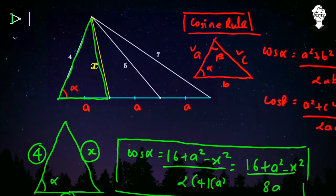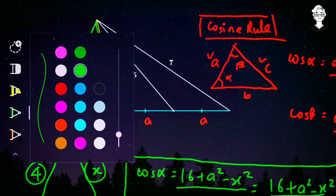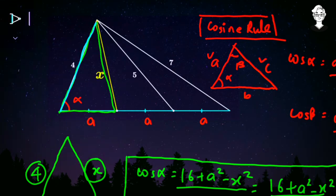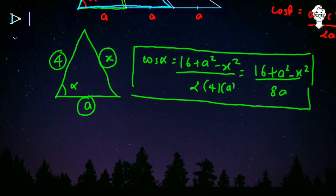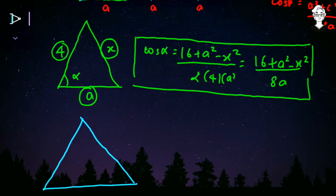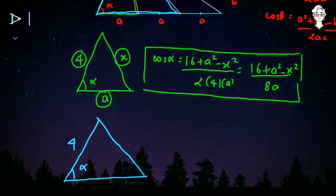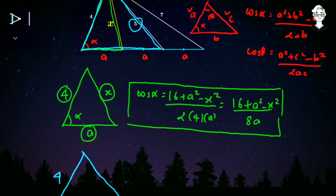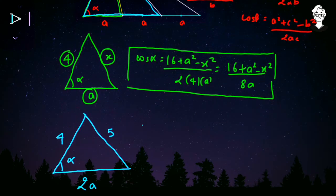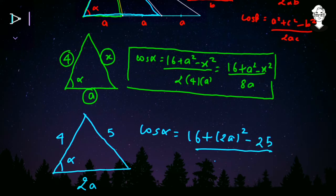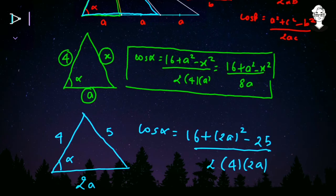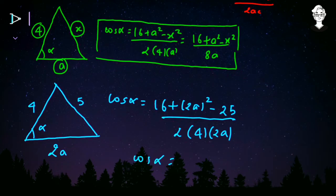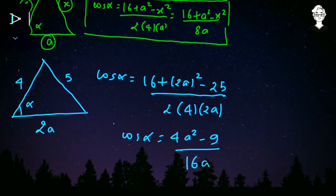Now let us find cos alpha in the second triangle. This triangle has angle alpha, side 4, base equal to a + a = 2a, and the opposite side is 5. So cos alpha = (4² + (2a)²  − 5²) / (2 × 4 × 2a) = (16 + 4a² − 25) / (16a) = (4a² − 9) / (16a). This is the value of cos alpha in the second triangle.